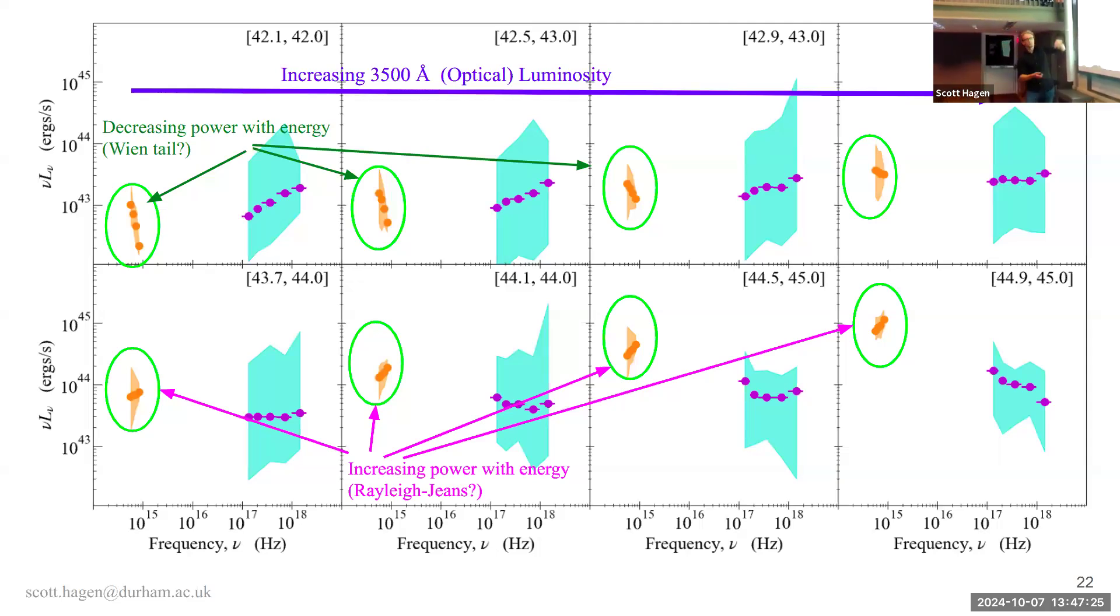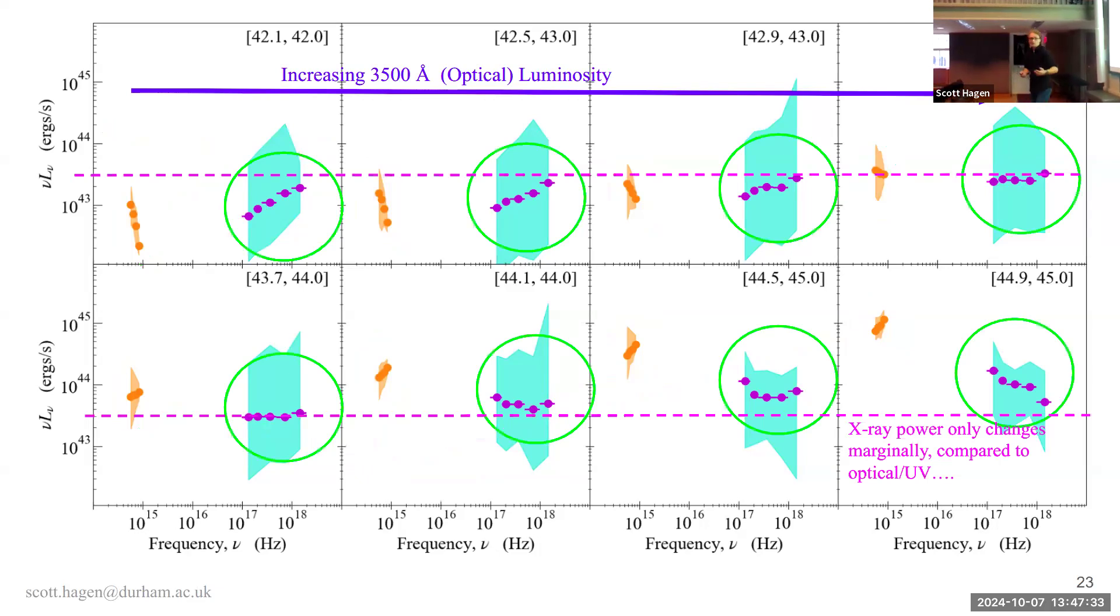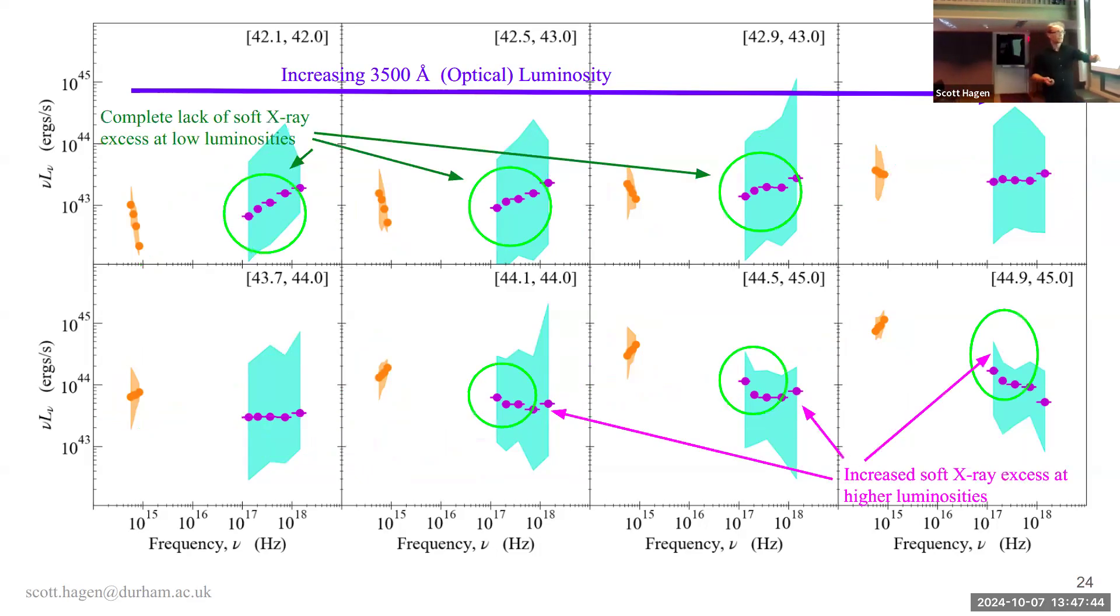However, in your low luminosity bins, this is an extremely red spectrum. It does not look like the typical AGN continuum. If we look at the X-ray, you'll notice, while the optical changed by several orders of magnitude, your X-ray total X-ray power only changes marginally in comparison. If we zoom in on the X-ray, you see in the soft X-ray low luminosity, we have a soft excess in these high luminosity bins, but a complete lack of soft excess in low luminosity bins, that just looks like a single power law.